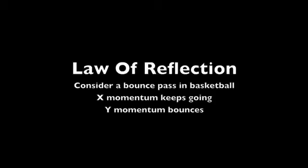Now, imagine instead of just a ball bouncing up and down, it hits the ground at an angle, like as in a bounce pass in basketball. The y component of the momentum would be reversed, but the x, or horizontal component of the momentum, would keep going.